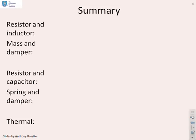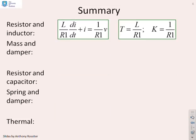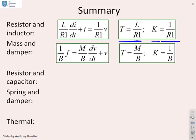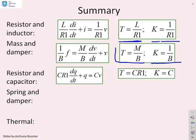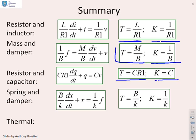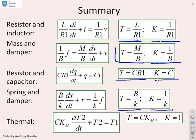Let's look at a summary of all these equations. For the resistor-inductor: time constant is L/R1, gain is 1/R1. For the mass-damper: time constant is m/b, gain is 1/b. For the resistor-capacitor: time constant is C·R1, gain is C. For the spring-damper: time constant is b/k, gain is 1/k. And for the thermal system: time constant is C·kh and gain is 1.